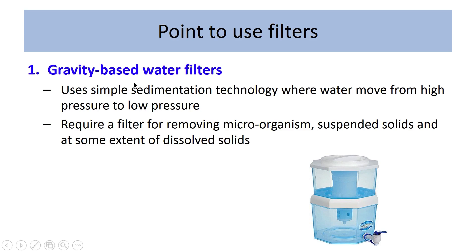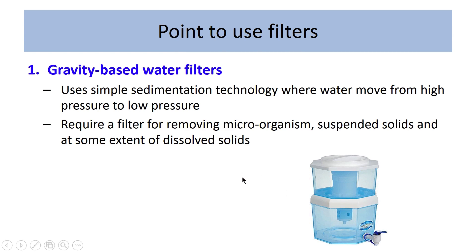Gravity-based water filters use simple sedimentation technology where water moves from high to low pressure. They are required for removing microorganisms, suspended solids, and some dissolved solids. The most commonly used gravity filter consists of two layers — sand and activated carbon. Sand acts as the filter media removing turbidity and some microorganisms, while activated carbon removes organic matter and taste- and odor-causing compounds.